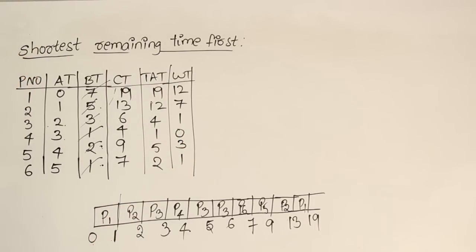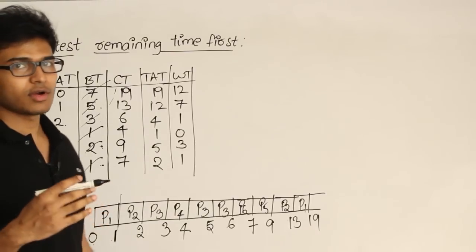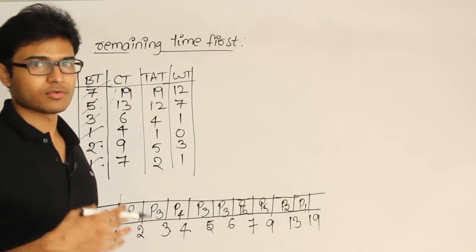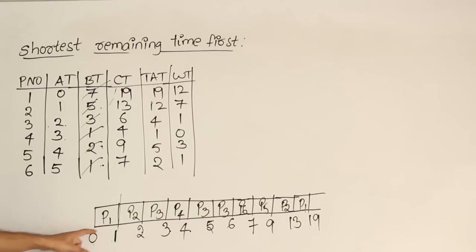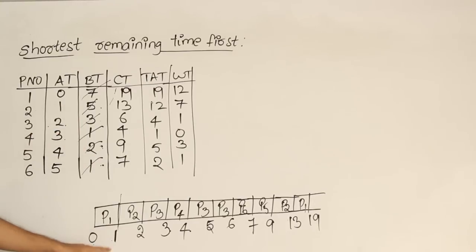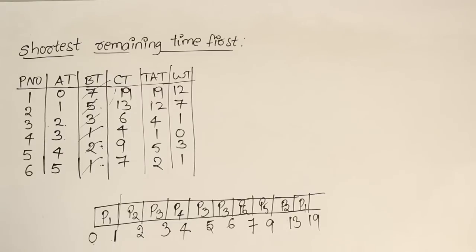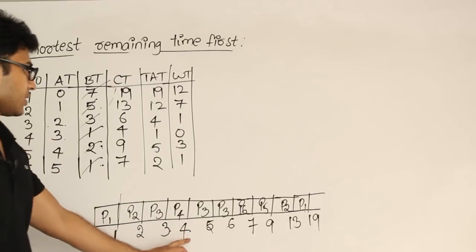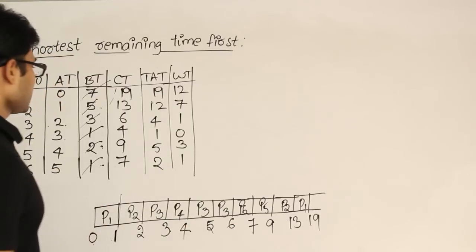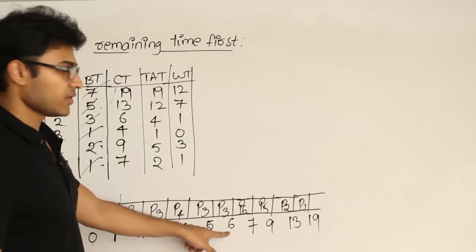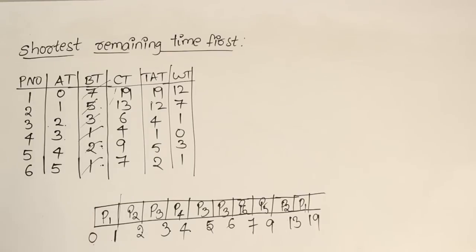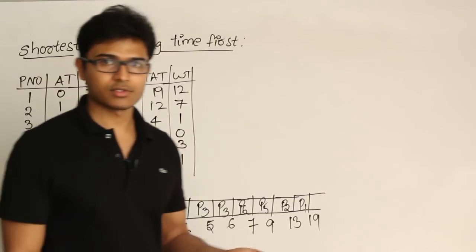You can also find average waiting time and average turnaround time. Sometimes they ask for response time — that is, after a process arrives, how long does it take to be scheduled for the first time? P1 runs immediately so response time is 0. P2 arrives at time 1 and runs at time 1, so response time is 0. P3 arrives at time 2 and runs at time 2, response time is 0. P4 arrives at time 3 and runs at time 3, response time is 0. P6 arrived at time 5 but ran for the first time at time 6, so response time is 1.